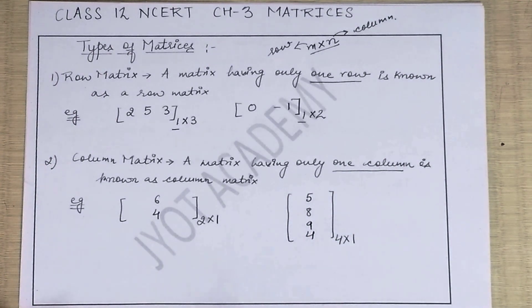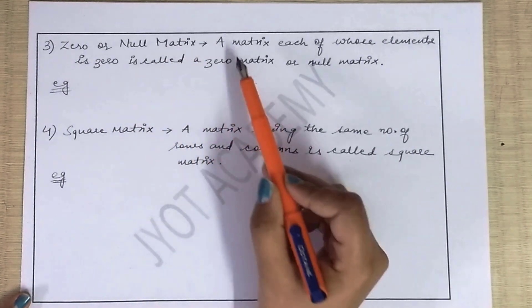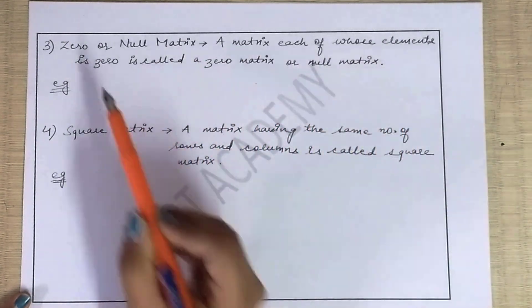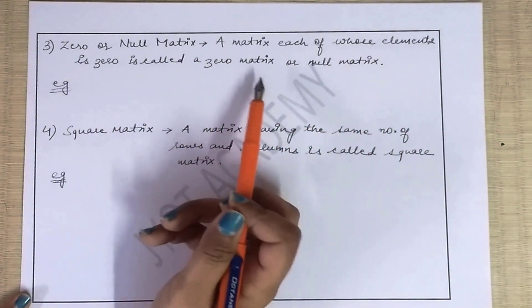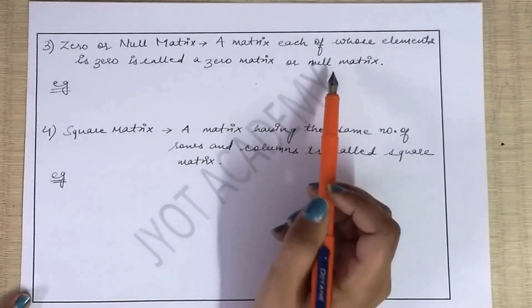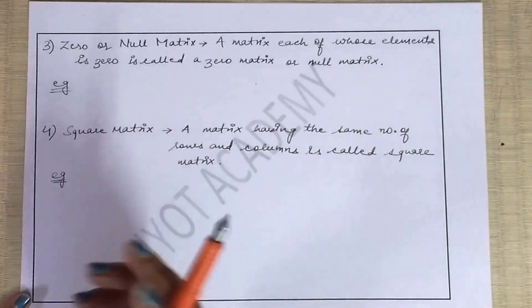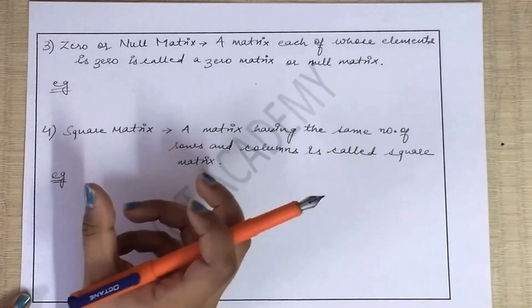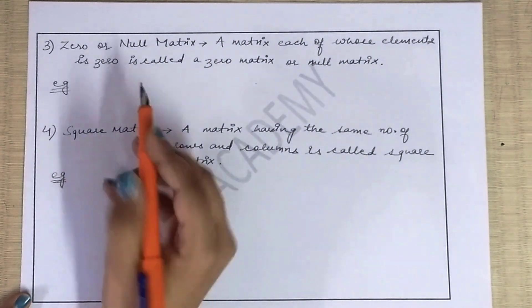Next dekhte hain zero or null matrix. A matrix each of whose elements is zero is called a zero matrix or null matrix. Aapki matrix ki order kuch bhi ho, lekin sare elements jo hain wo zero hone chahiye.